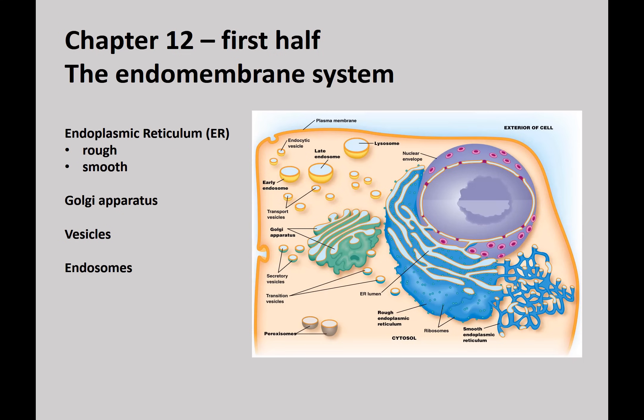I try to hit the high points and explain general concepts that sometimes people find challenging. The first half of chapter 12 is about the endomembrane system and focuses on the ER, the Golgi, and the vesicles. We'll talk just a little bit about endosomes, but we'll come back to those more in the second half of chapter 12.